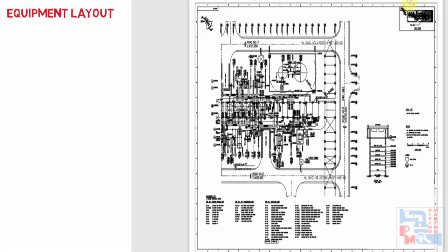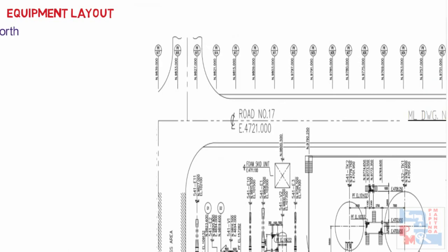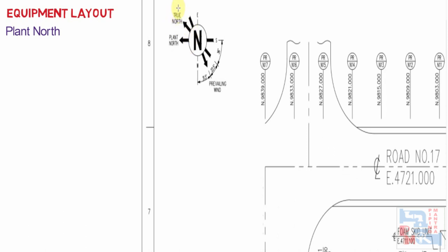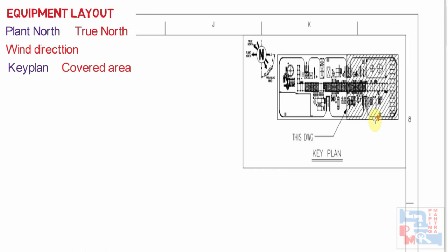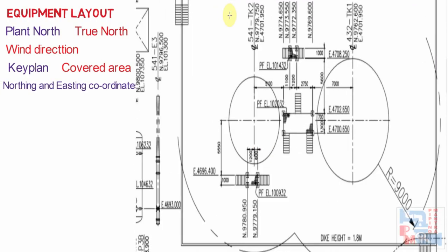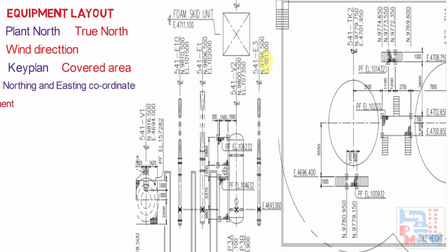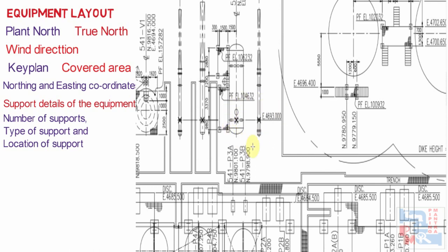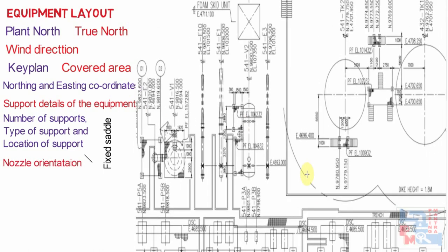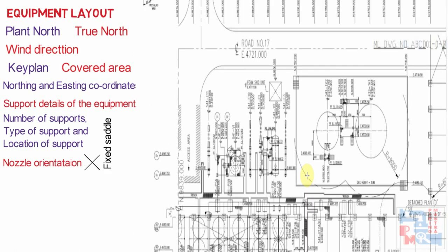Now let's see what the final equipment layout drawing will look like. Plant north direction should be shown — if possible, also show true north and wind direction as in the overall plot plan. Each unit plan is to have a key plan of the overall GA highlighting the area covered by that unit plot plan. All equipment items should be located by northing and easting coordinates or by centre lines or dimensions from the column centre. The layout must clearly show support details of the equipment: number of supports, type of support, and location of support. In the case of horizontal equipment like drums or exchangers, we have to mark the fixed saddle support. Equipment layout will never show the nozzle orientation of equipment — for that, you have to refer to the nozzle orientation drawing of the specific equipment.